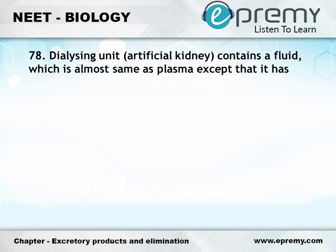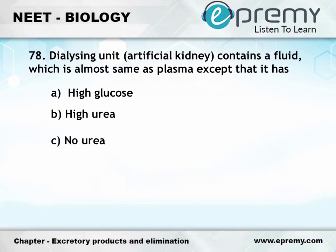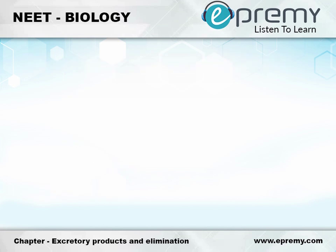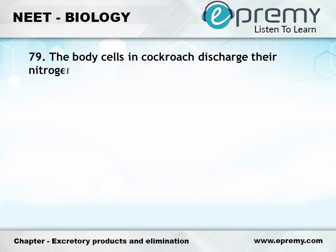Question number 78: A dialyzing unit contains a fluid which is almost the same as plasma except that it has — Option A: High glucose, Option B: High urea, Option C: No urea, Option D: High uric acid. The answer is Option C: No urea.